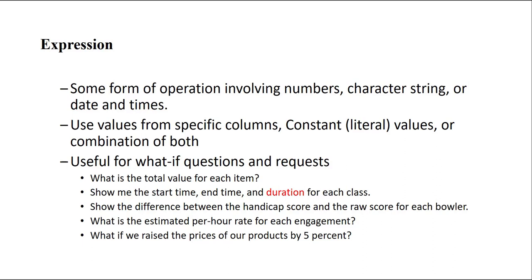Another example: in a scheduling database of classes we have for each class a start time and an end time. Based on the start and end time we can calculate the duration of each class — the difference between the end time and start time. In a bowling example, we have a handicap score and a raw score for each bowler, and we can get the difference — that's also an expression.